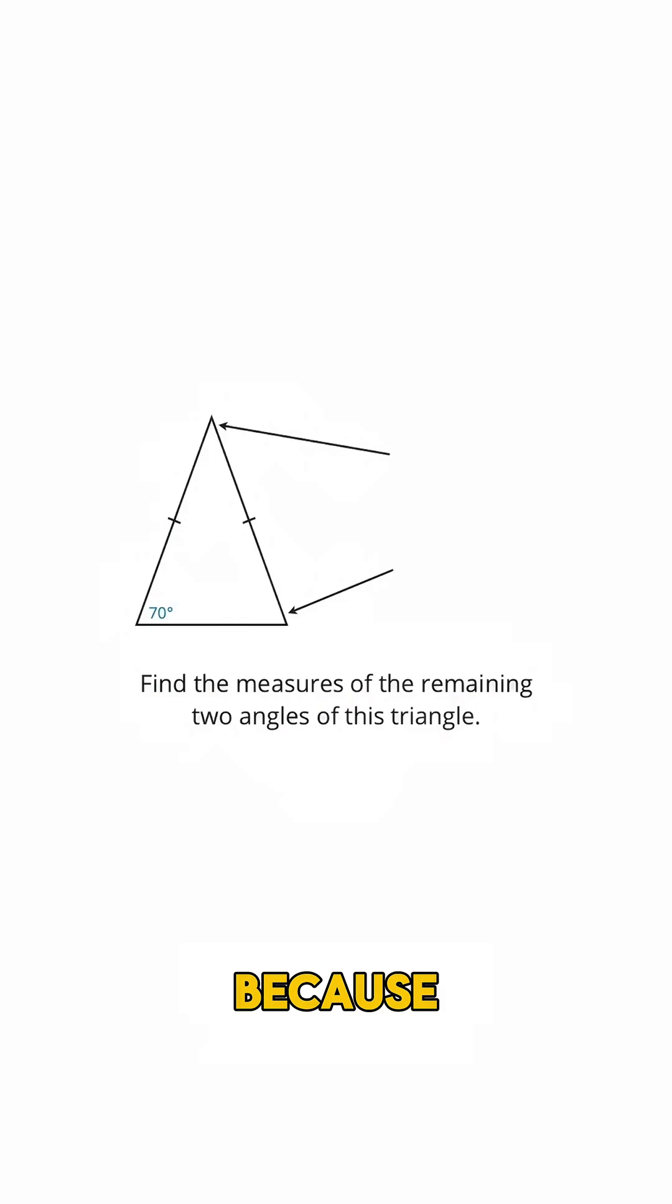Nicely done. Because this triangle is isosceles, this angle here must also equal 70 degrees, leaving 40 degrees for this angle up here.